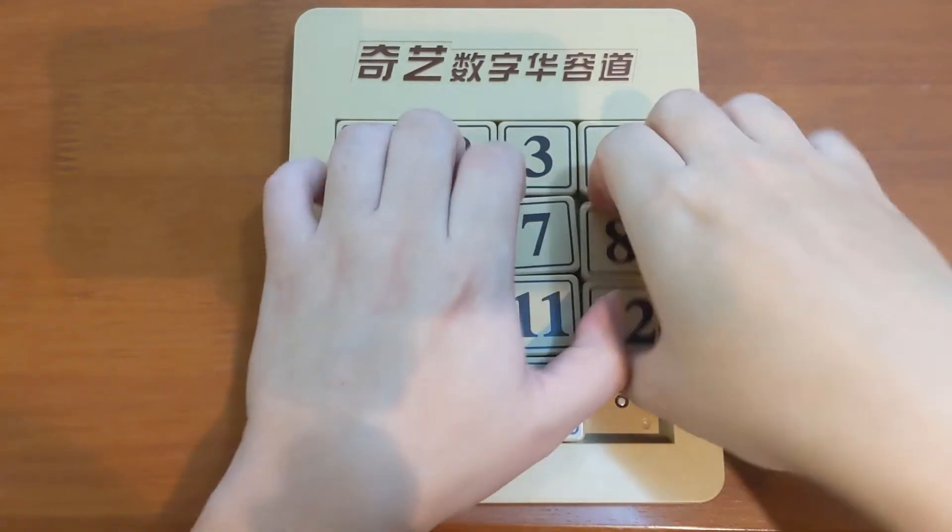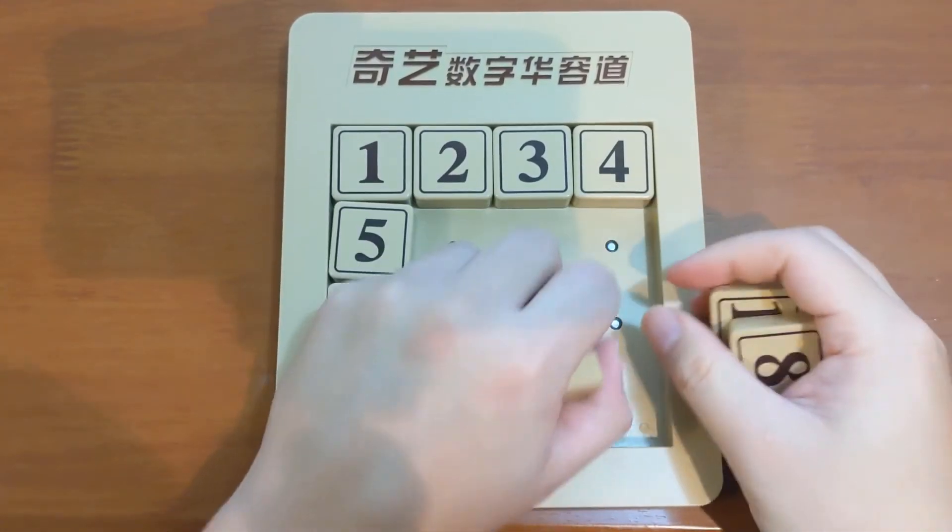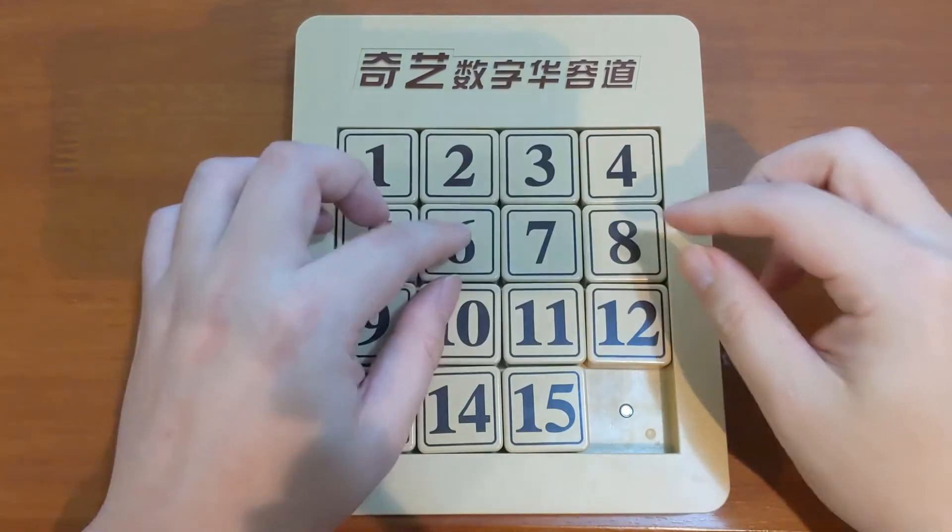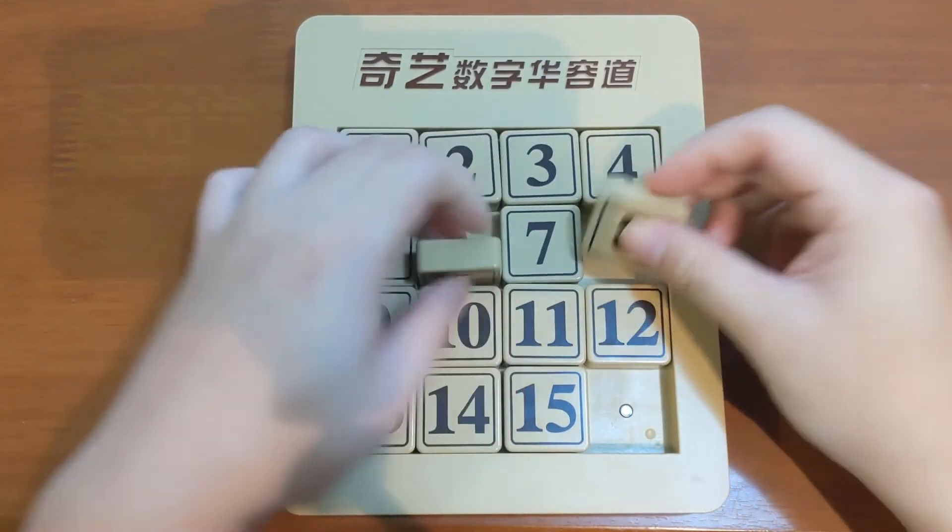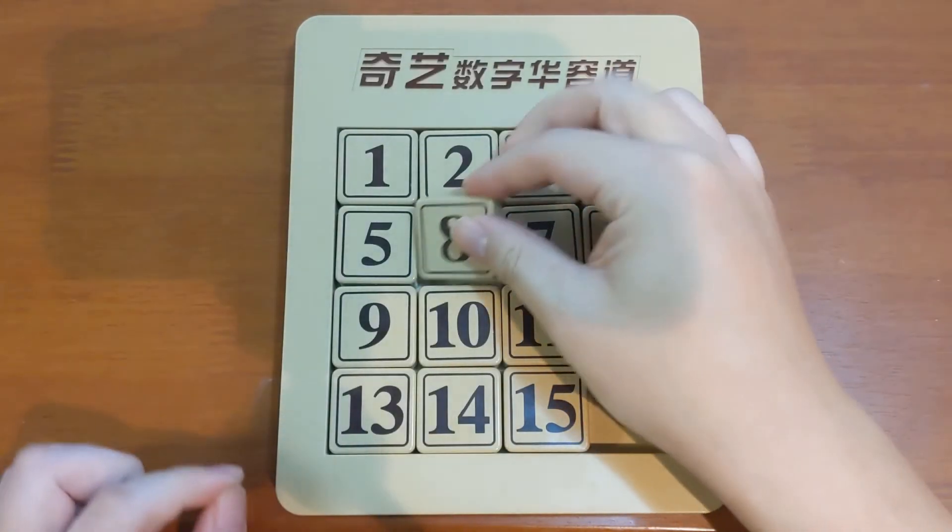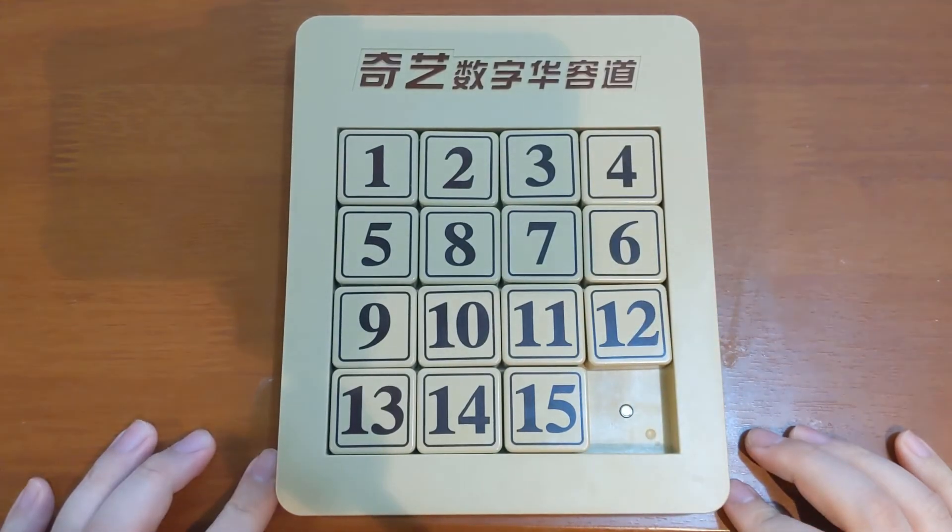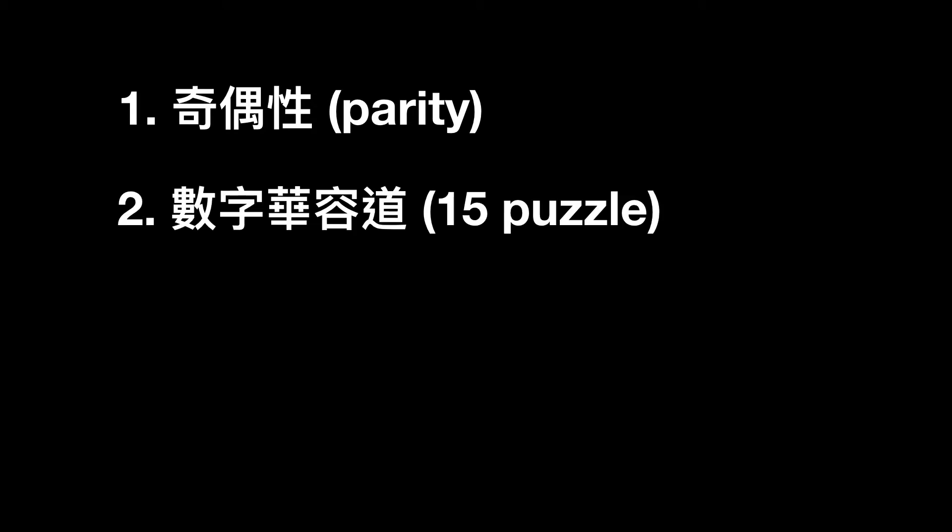Just like Rubik's Cubes, if there are invalid operations, like this, or take any two pieces out, swap them, and put them back, that will make this puzzle unsolvable. In this video, I'm going to explain parity with an example, and then prove some cases in 15 puzzle are impossible to solve.